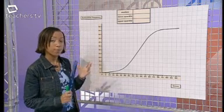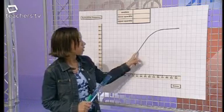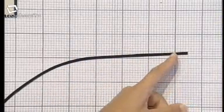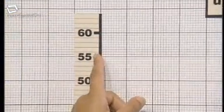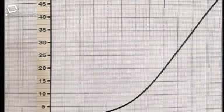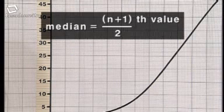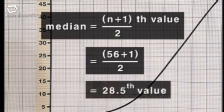To estimate it from the graph, first find the total number of values in your data. That's the highest value the curve reaches up the vertical axis. If I read back to the vertical axis, that's 56. Next, find the position of the middle value. Strictly speaking, you do that by using this formula, where n is the total number of values. In this example, n is 56, plus 1 gives 57, divided by 2, which is 28.5. The median is the 28.5th value.